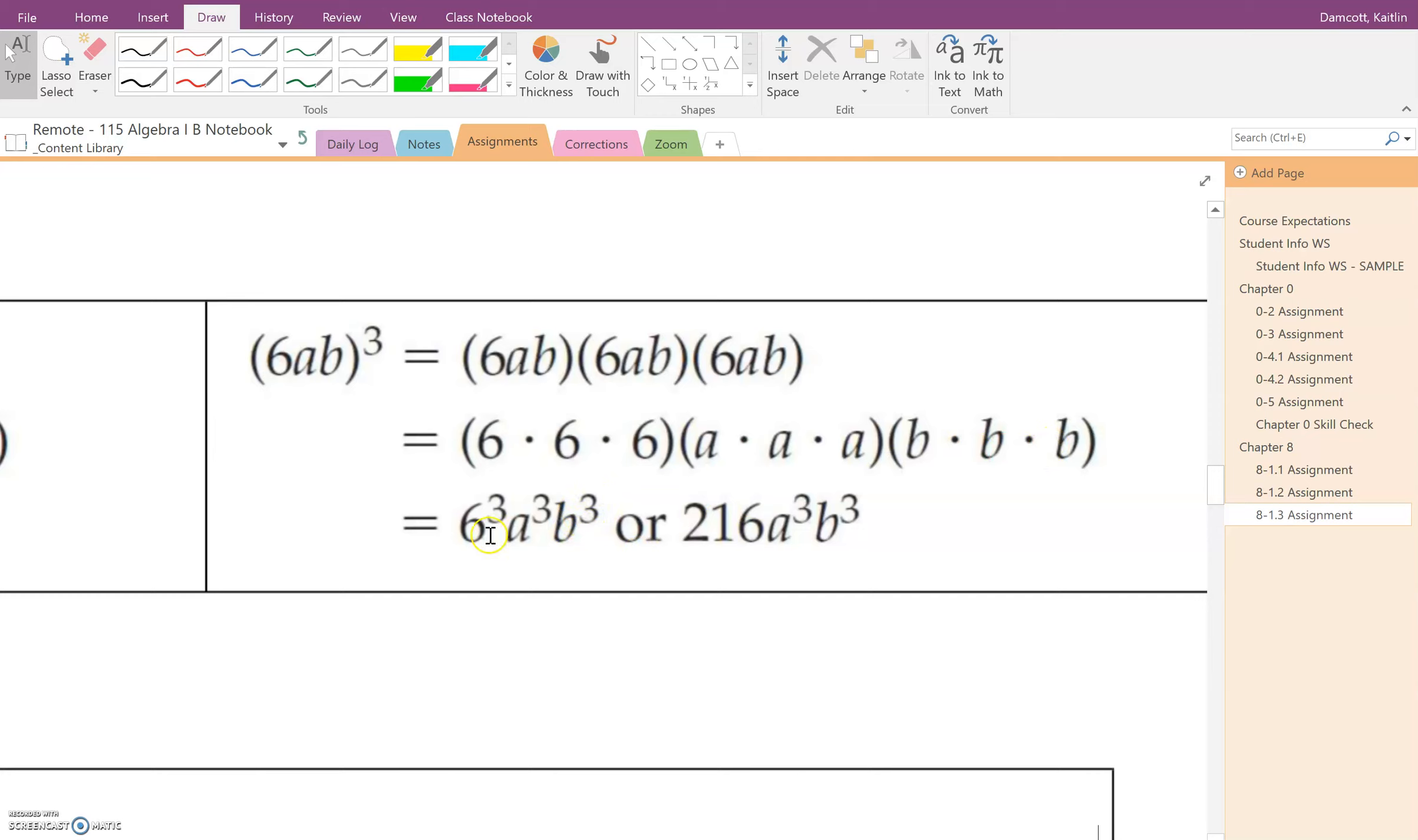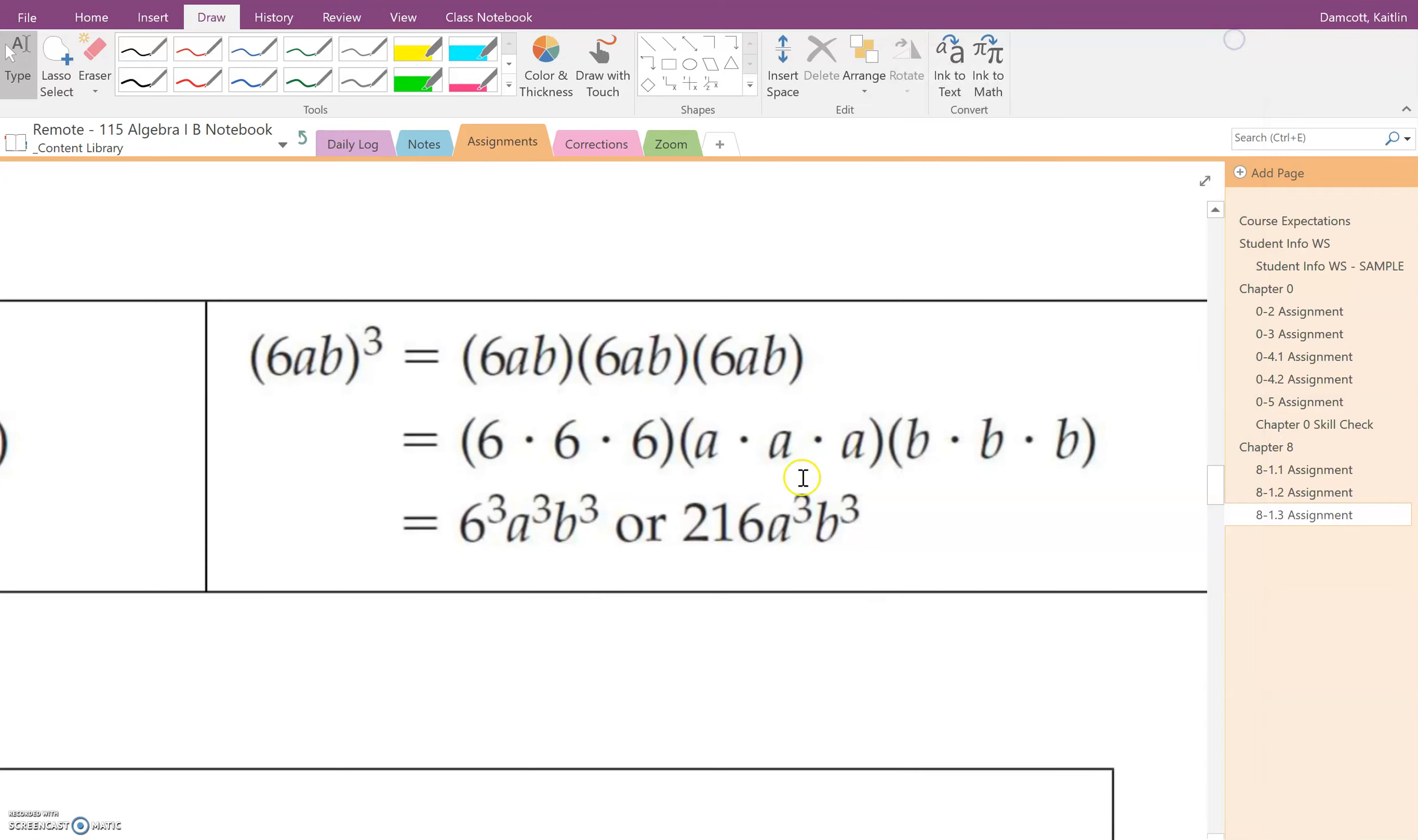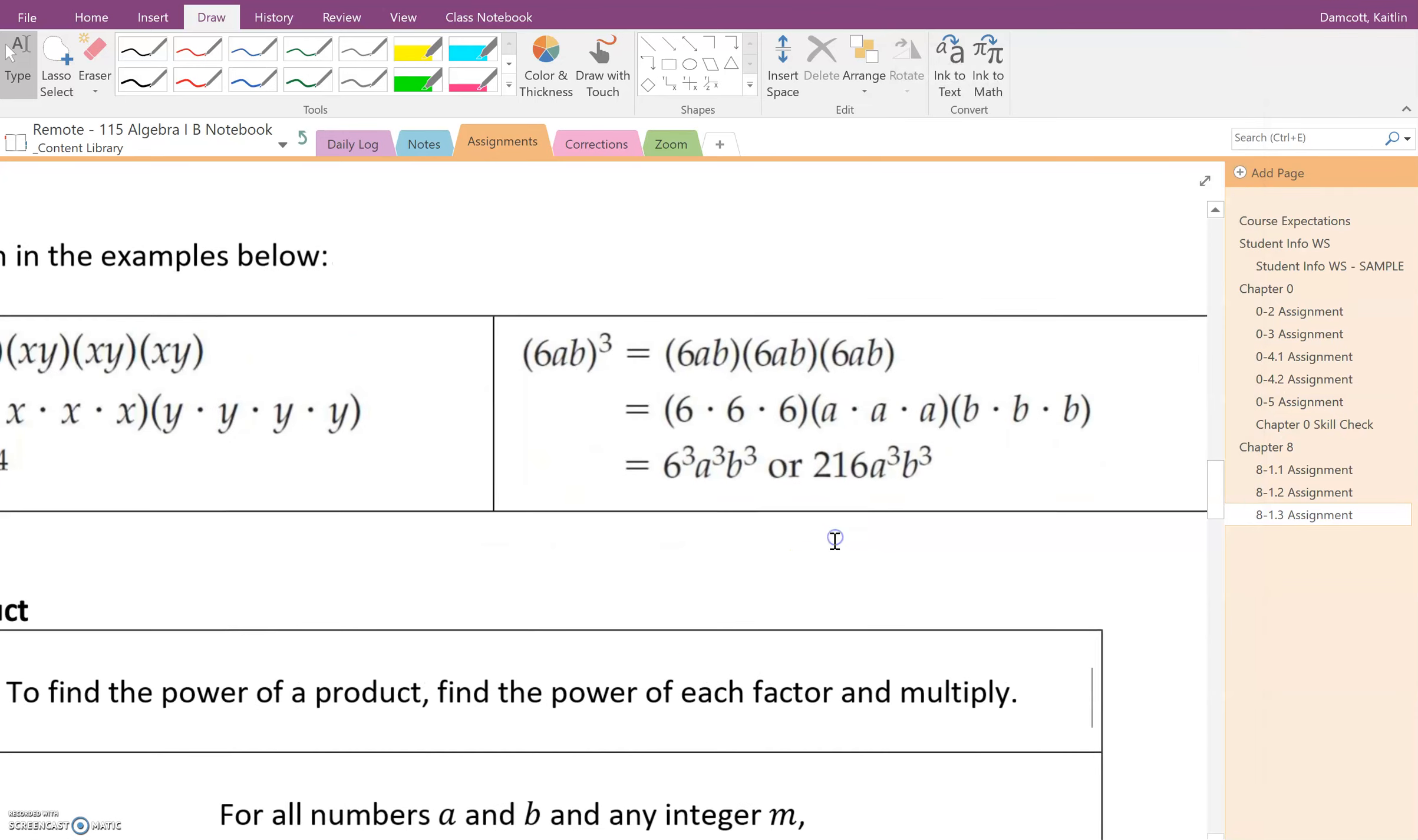Now you could take this a step further and put into your calculator 6 to the third. If you're practicing doing that, you would just do 6 and then the caret and then 3. And it does indeed come out to be 216. So that is a better way to do it, to have that simplified out to 216. But it demonstrates what the pattern is a little bit better when it's written this way.